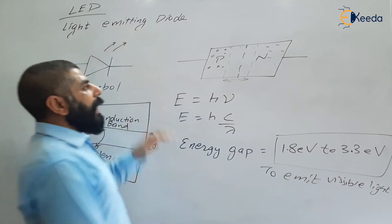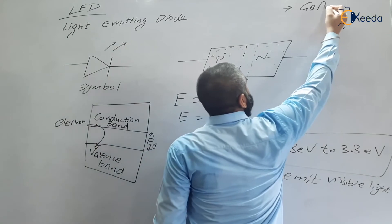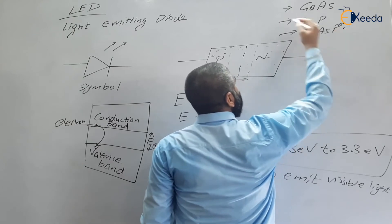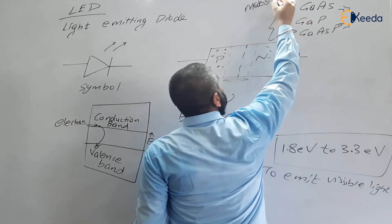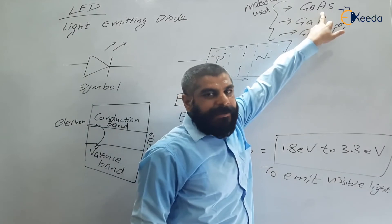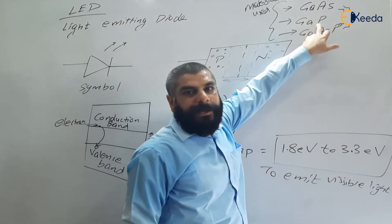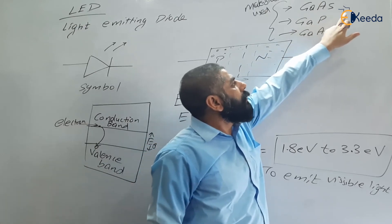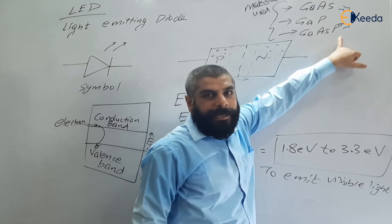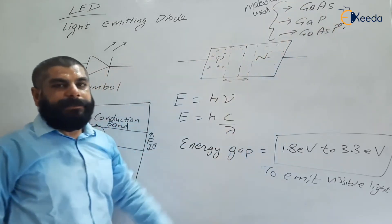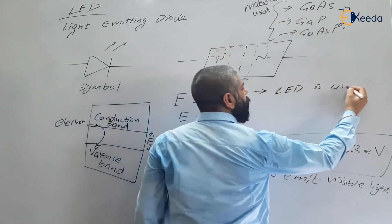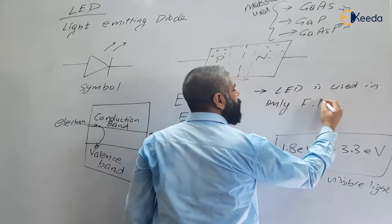The materials used to prepare LEDs are: gallium arsenide (GaAs), gallium phosphide (GaP), or gallium arsenide phosphide (GaAsP). Gallium arsenide is used to generate infrared rays, gallium phosphide is used to generate red or green light, and gallium arsenide phosphide is used to generate red or yellow light. LED is used only in forward bias mode.